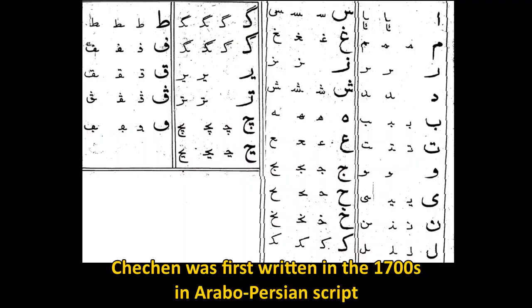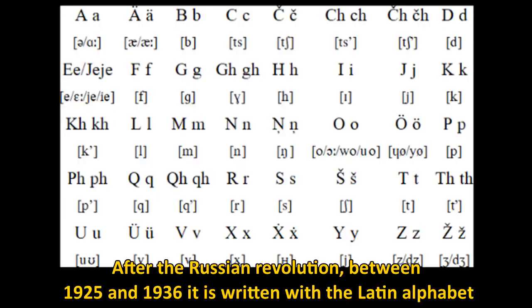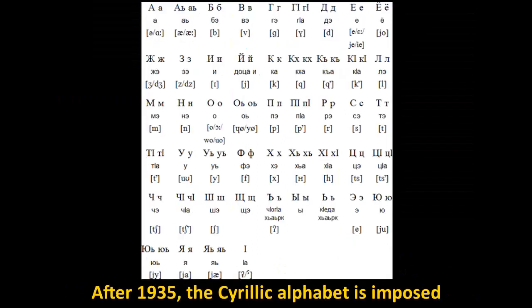The first written documents in Chechen were made in the Arabic-Persian alphabet in the 1700s-1800s, but the Chechens typically didn't write their language often, especially after incorporation by the Russian Empire. After the Russian Revolution, between 1925 and 1936, Chechen was written with a Latin alphabet, but after the rougher period of Stalinism in the 1930s, the Cyrillic alphabet was imposed on Chechen, and that's the alphabet Chechens still use today.